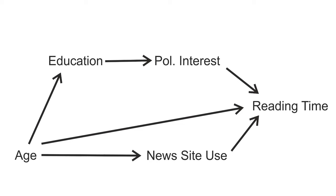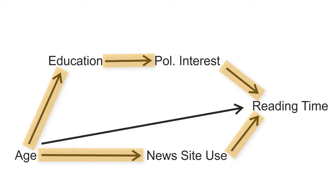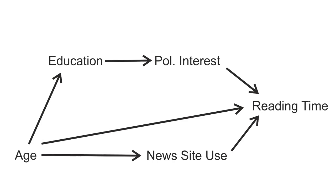We cannot estimate this model in one go in PROCESS, because there is both serial mediation — from age to education to political interest to reading time — and there is parallel mediation, because news site use also mediates the effect of age on reading time. We can estimate this model in SPSS as a series of regression models. For each variable in the path model that can be an outcome variable in a regression, we must estimate a regression model. So that will be four regression models.